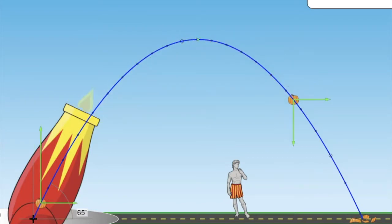At the same time, the horizontal component just stays the same. There is no force in the horizontal direction, so nothing to make the pumpkin speed up or slow down.